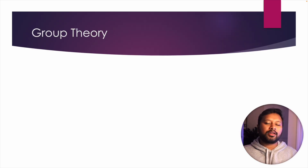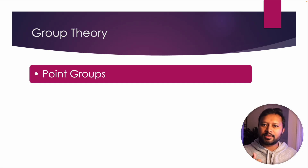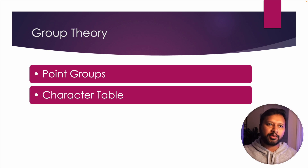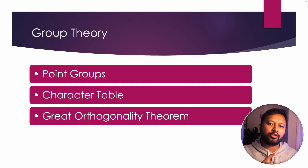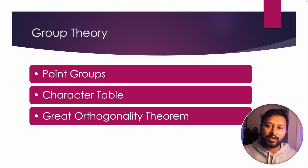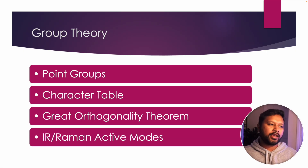The next topic is group theory — one of the easier topics if you're good at drawing or imagining things in 3D. The first thing is point groups: understanding symmetry operations and how to find the point group of a molecule. Then questions related to character tables, including the Great Orthogonality Theorem, finding Raman and IR modes, and determining whether a transition between two states is x-, y-, or z-polarized, or not allowed. The concept of IR and Raman active modes is an important topic.